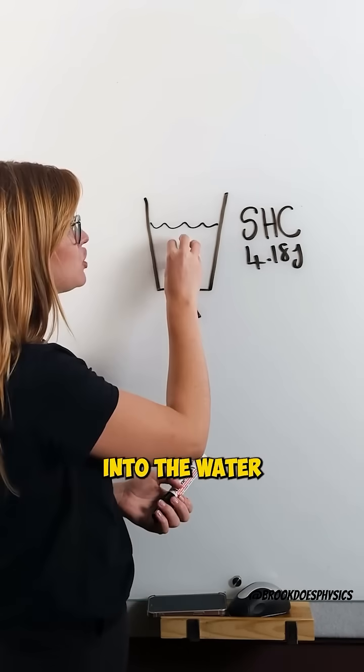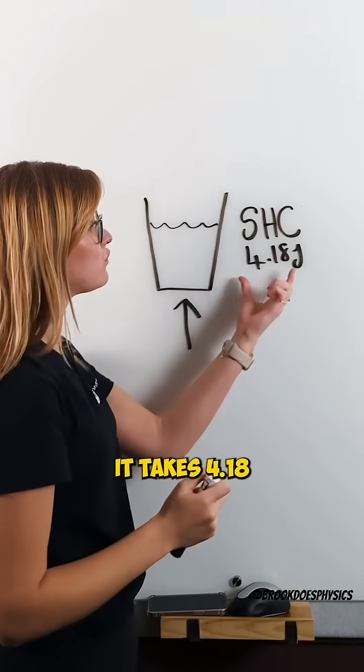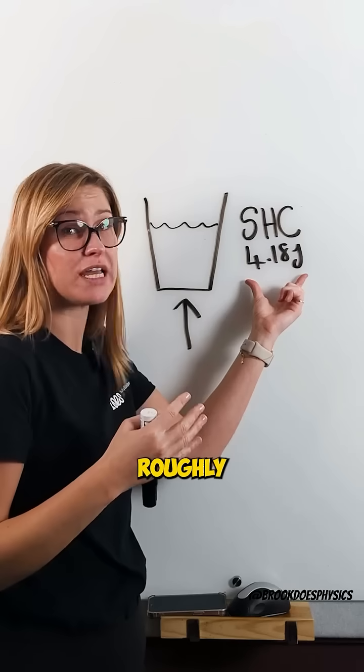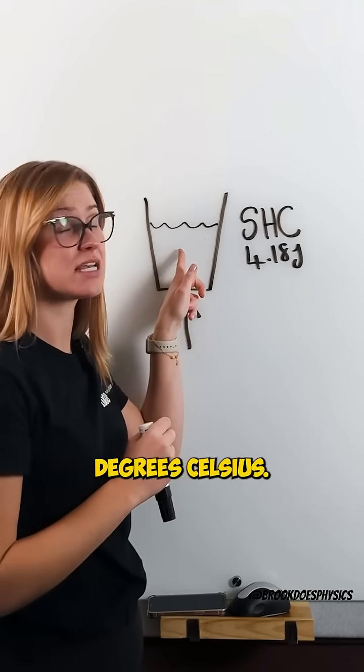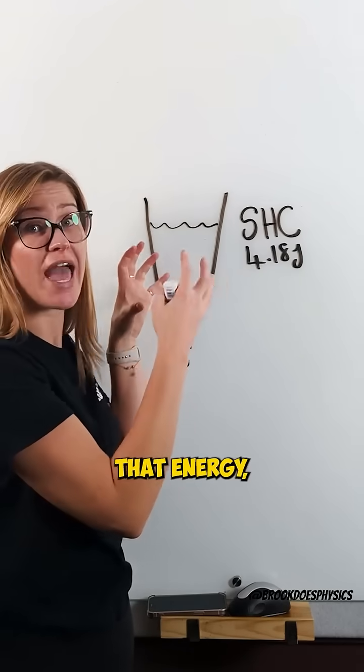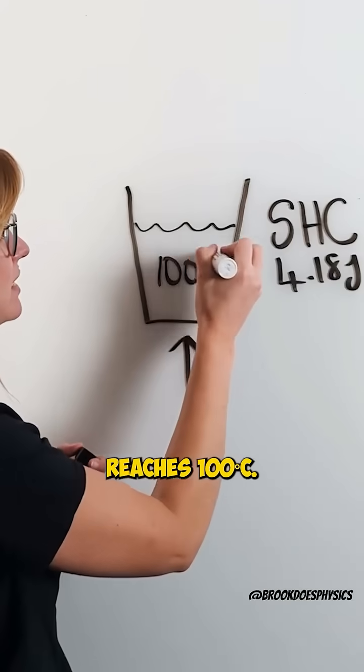So that heat gets conducted into the water because water has such a high specific heat capacity. It takes 4.1 joules of energy, roughly, to increase the temperature of 1 gram of water by 1 degree Celsius. So the water will absorb all of that energy and will continue to absorb that energy until it reaches 100 degrees Celsius.